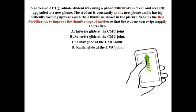Flexion and extension are movements of the thumb. The concave metacarpal moves over the convex trapezium, so the glide will be in the same direction. Here the concave-convex rule is applied. So the answer for this case is radial glide at the CMC joint — the carpometacarpal joint — because it improves the extension of the thumb.